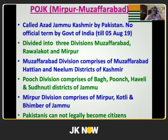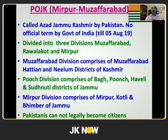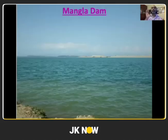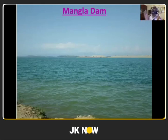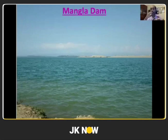Pakistan calls this area Azad Jammu and Kashmir; we did not have an official term for it till 5th August 2019. It has been divided into three divisions. Pakistanis cannot legally become citizens of this part. This is the Mangla Dam — the dam that submerged a city. There was a city called Mirpur which got completely submerged, and a new Mirpur city was constructed.